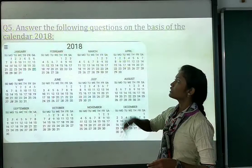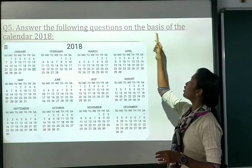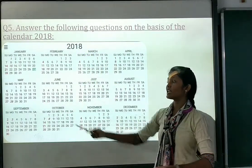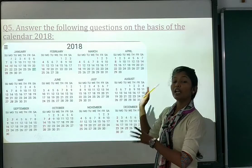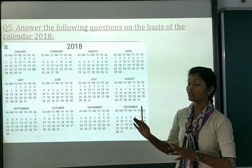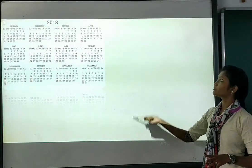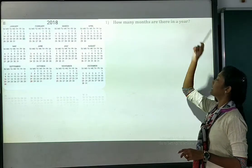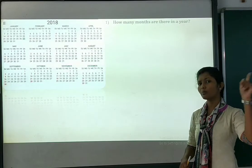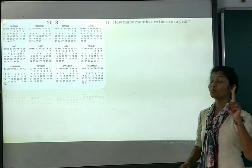We will see question number 5: answer the following questions on the basis of the calendar 2018. We have the 2018 calendar here, and with its help we are going to complete the questions. Question number 1: how many months are there in a year? There are 12 months.